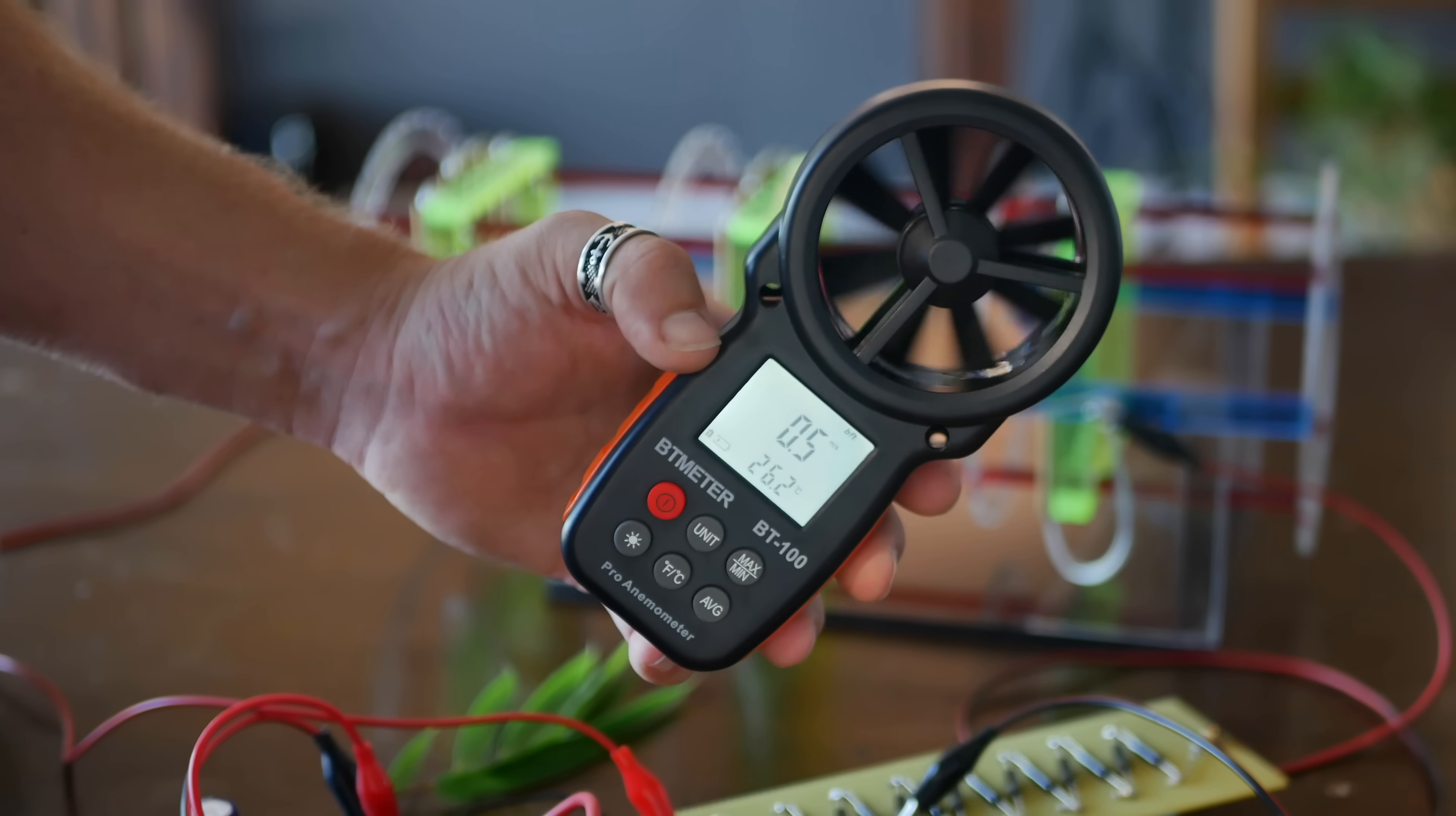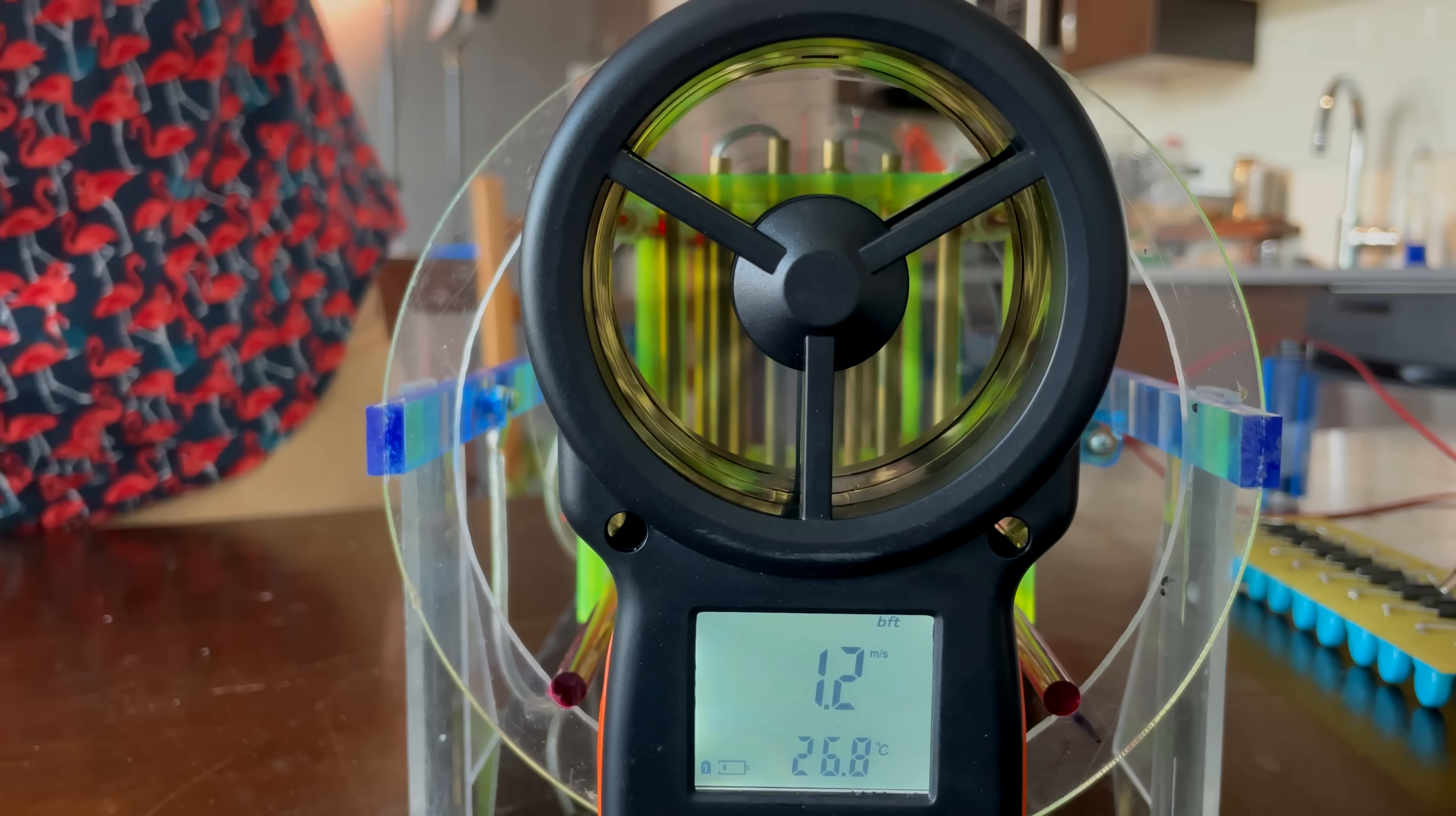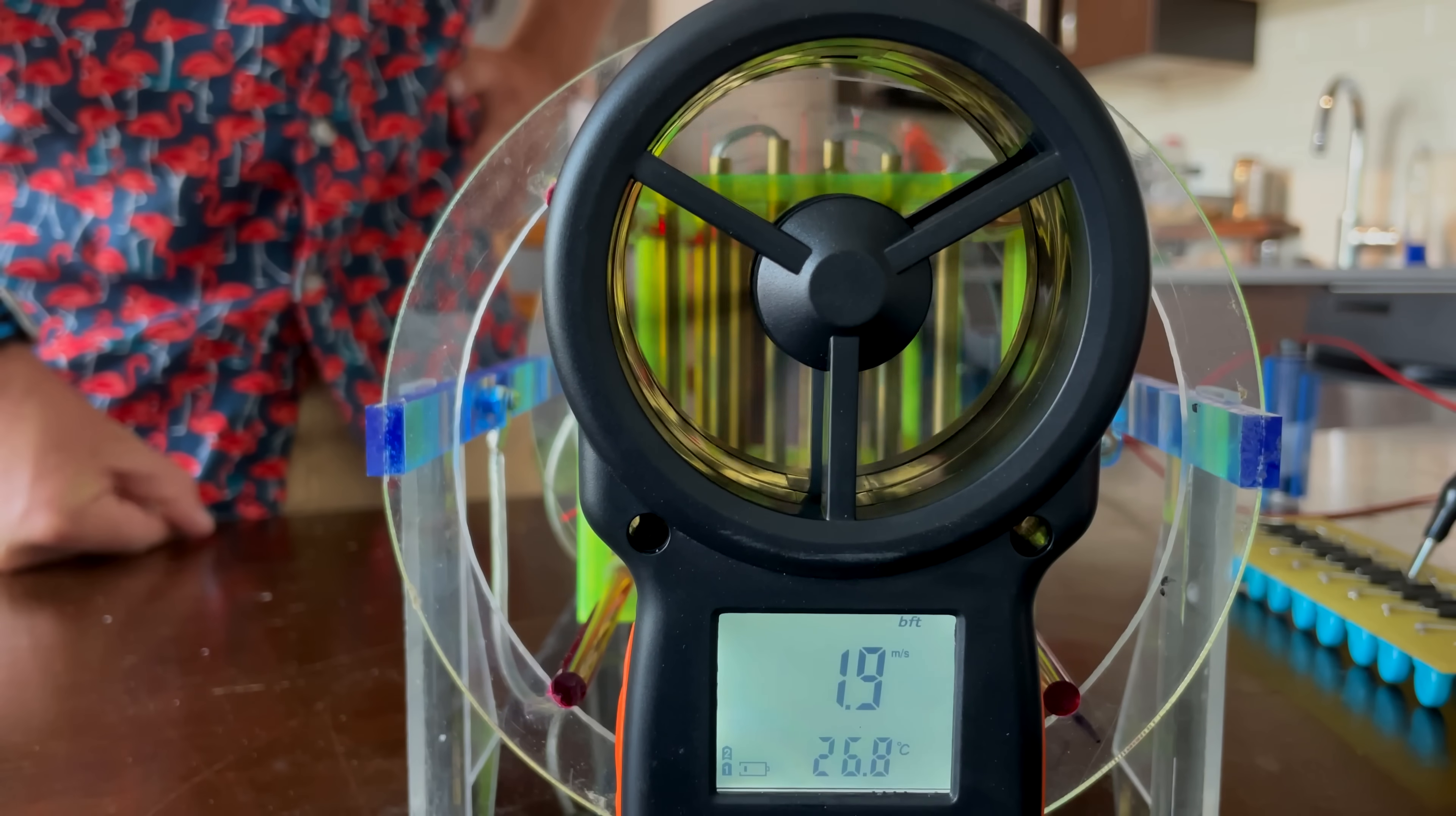I was curious about the hard numbers, though, so in came the wind meter. I started spacing at one inch and tapped the third stage from the multiplier, providing 33 kilovolts. As you can see, this led to a velocity of 1.6 meters a second. Next, I selected one stage higher on the multiplier, providing 45 kilovolts. This led to an increase in velocity up to 1.9 meters per second.